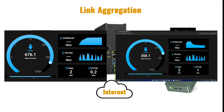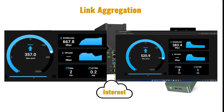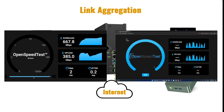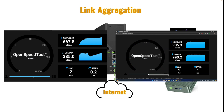Here we can see that each client isn't getting the full 1Gb transfer speed to the NAS because they are both sharing the bandwidth through a single gigabit LAN port. If I run the same speed test from a single client, the transfer speed is much better because it isn't sharing the bandwidth anymore and has full access to the gigabit LAN port.